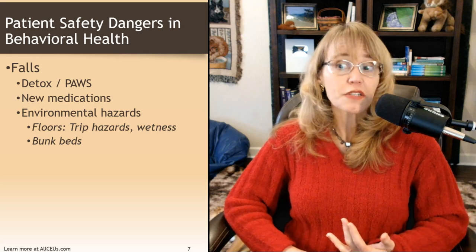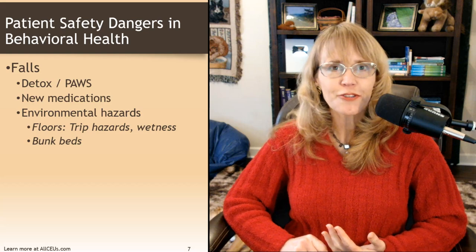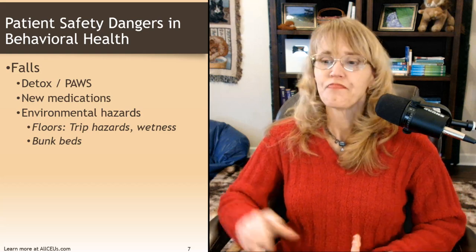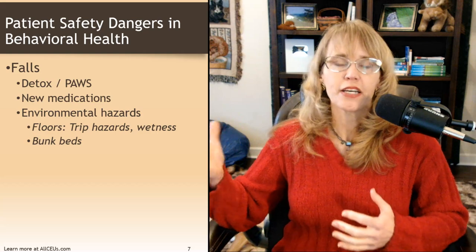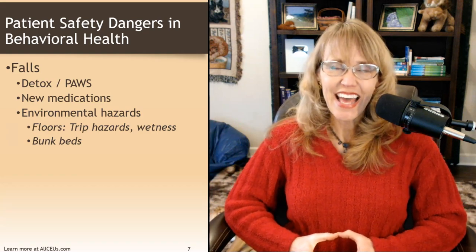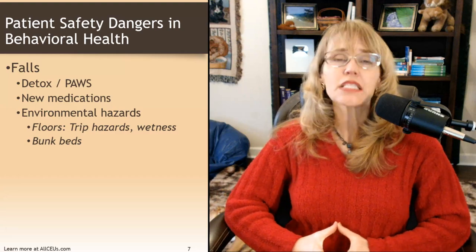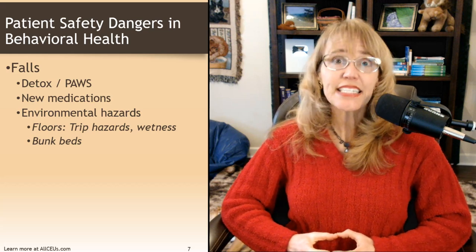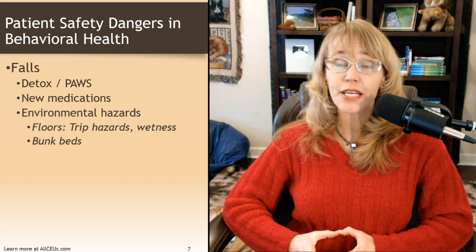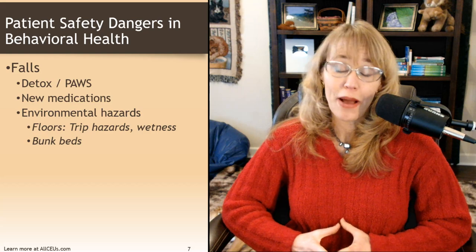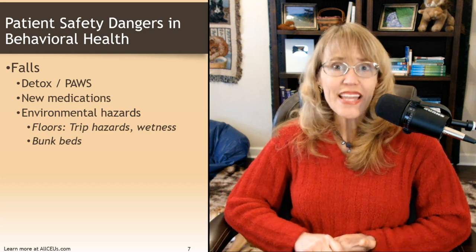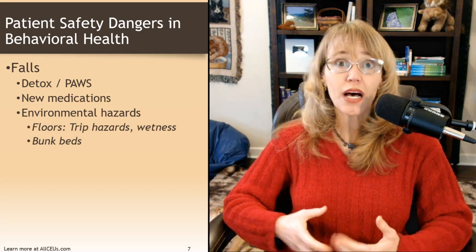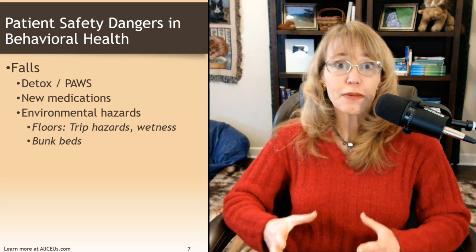Environmental hazards for falls include floors, trip hazards like rugs or wires, and wetness. My gym has beautiful tile floors that look like wood but every time it gets the least bit damp outside, you feel like you're on a skating rink. If there is wetness, ideally have flooring that isn't quite that slick, but if there is wetness, make sure that you put up slip-and-fall signs to alert people so they're more careful. And for residential settings — bunk beds.